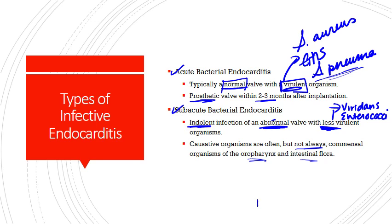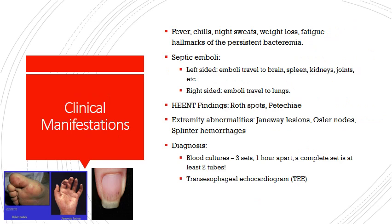The predisposing factors to endocarditis with enterococci are somewhat specific. With enterococci, we're worried about things like pregnancy, instrumentation or surgery of the genitourinary tract, and colon cancer — all associated with enterococcal infections in general. The enterococci are normal microbiota of the gastrointestinal tract, so during pregnancy, genitourinary surgery, or colon cancer, there is opportunity for them to be displaced into the bloodstream and colonize a heart valve.